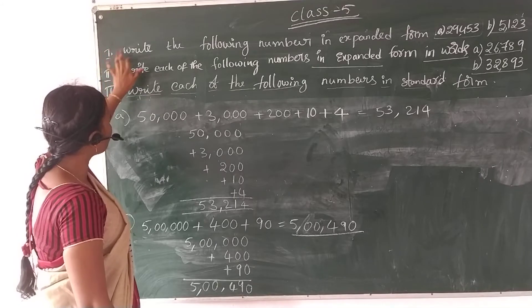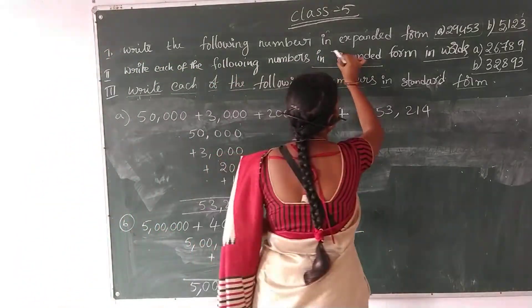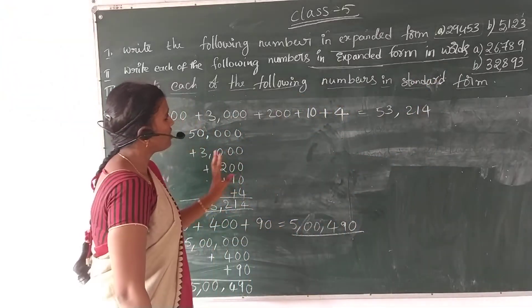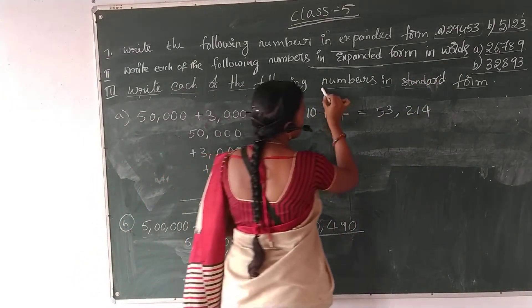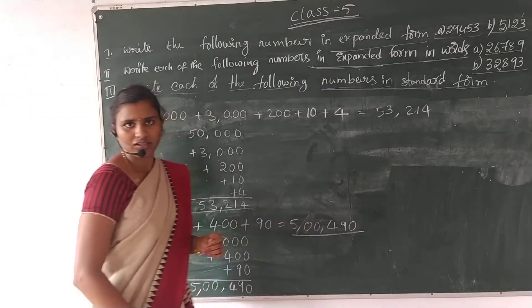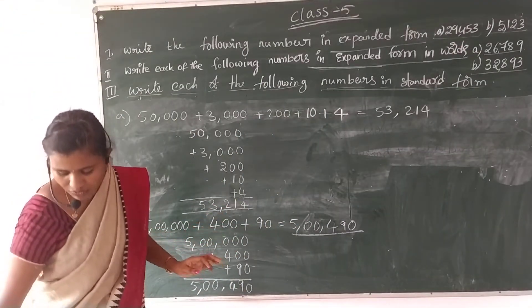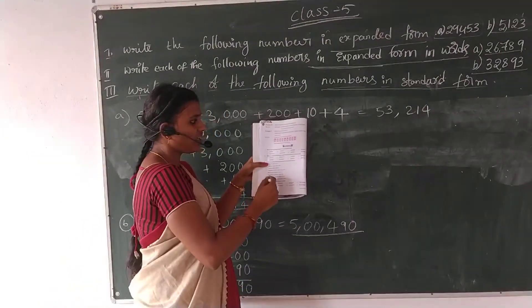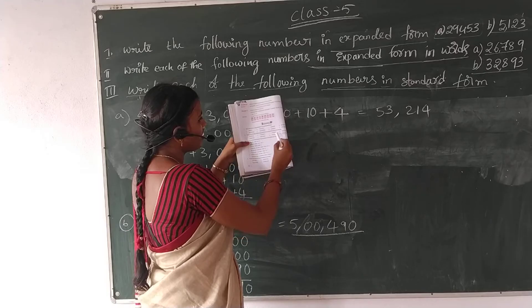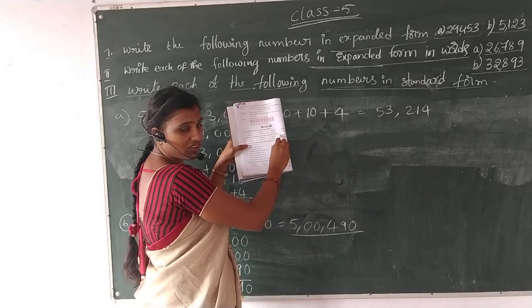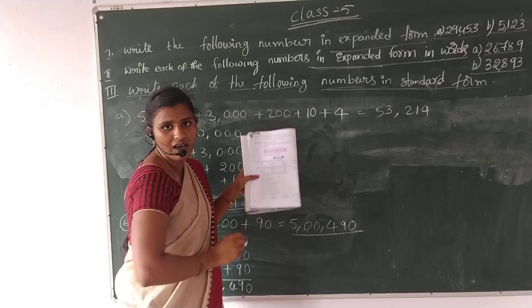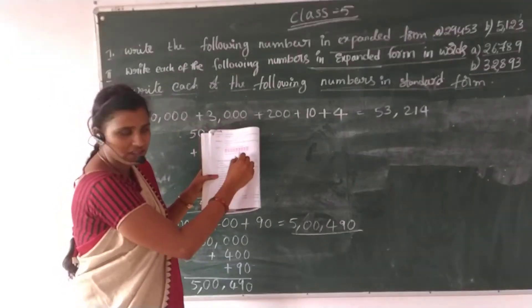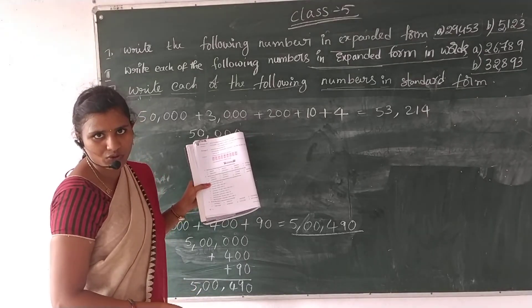Right, I understood this. Here some expanded form inverse and expanded form inverse. Next, standard forms are there. See once in your textbook. Understood.